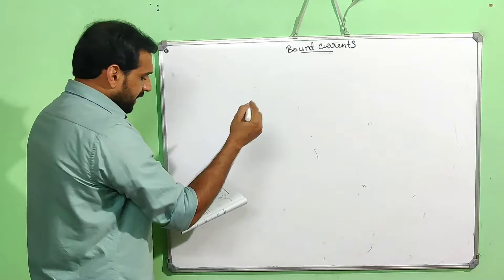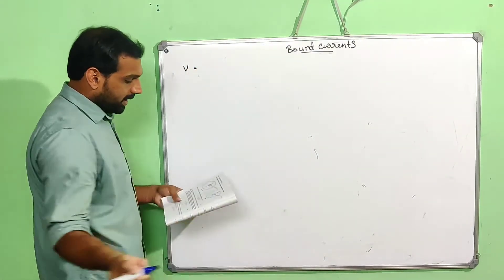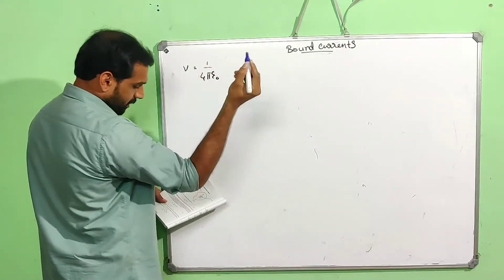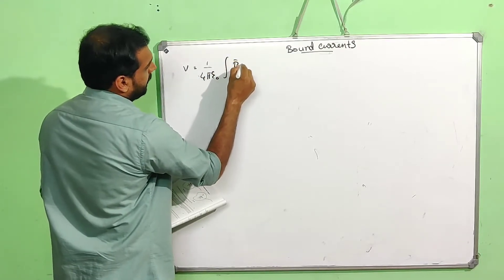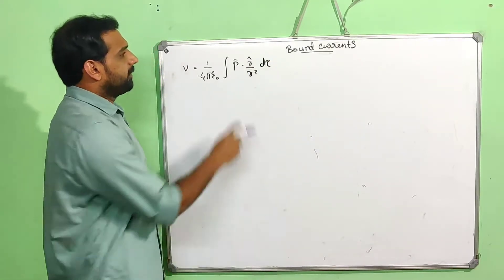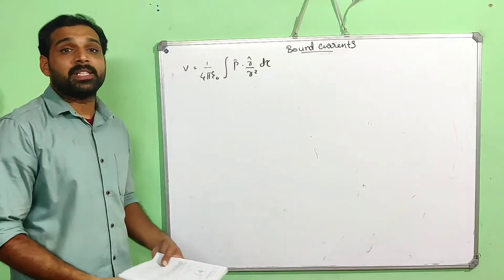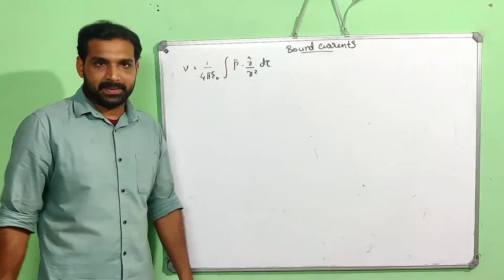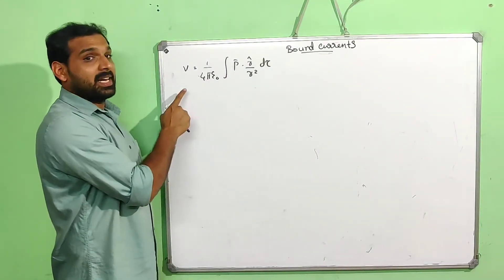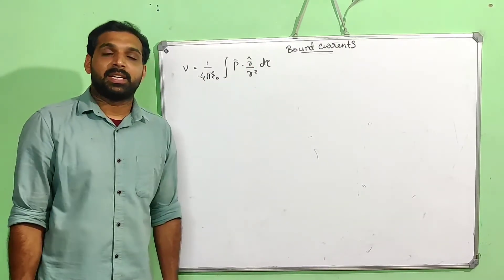The title is: field due to a magnetized object, and subtitle is: bound currents in a magnetized object. Now, electric potential due to a polarized object — the formula is V = (1/4πε₀) ∫ P·r̂/r² dτ, where P is the polarization — dipole moment per unit volume.